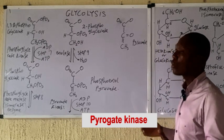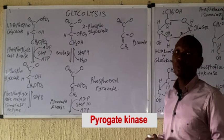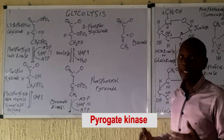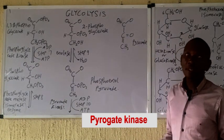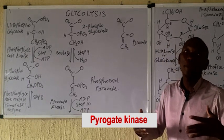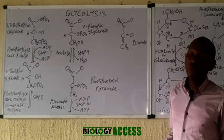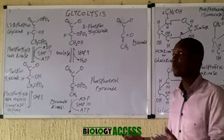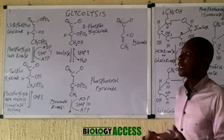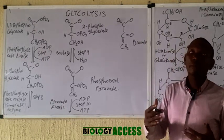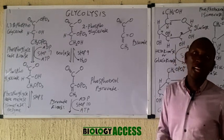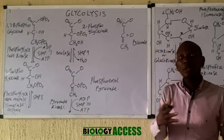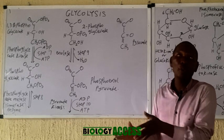The overall reaction of glycolysis is written on the board for reference. In the body, nothing comes from nowhere — the phosphate groups and glucose used in these reactions come from food intake. Your metabolic system converts substances taken from food into forms useful or needed by the body at any given time.